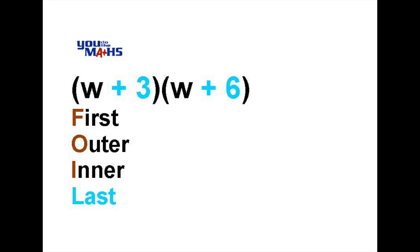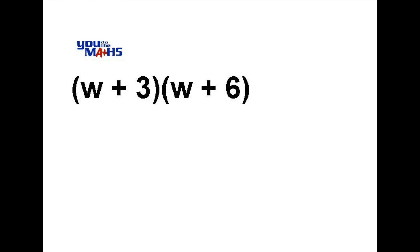So adopting that procedure, we'll multiply the first two terms of both brackets. That's the first part of the multiplication, so that's W multiplied by W. Then the outer part of the two brackets are the W and the 6. You can see the red add sign there belongs to the 6, so it's add W multiplied by 6.